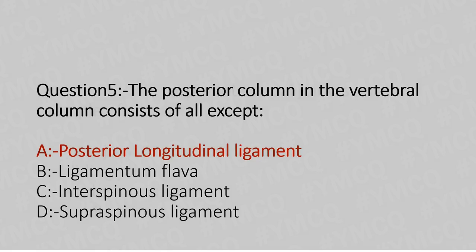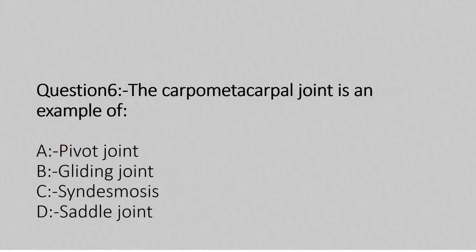Now let's move to question number 6. The carpometacarpal joint is an example of — option A: pivot joint, option B: gliding joint, option C: synchondrosis, option D: saddle joint. The answer is option D, saddle joint.